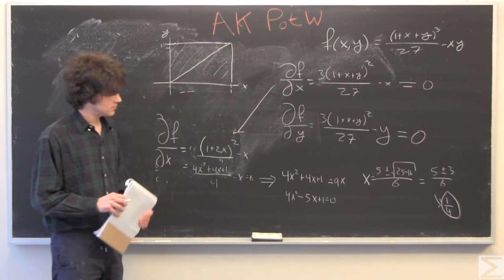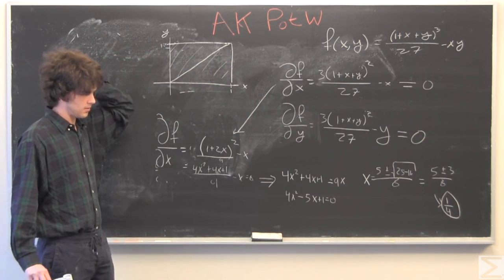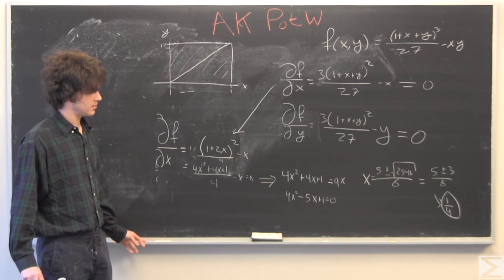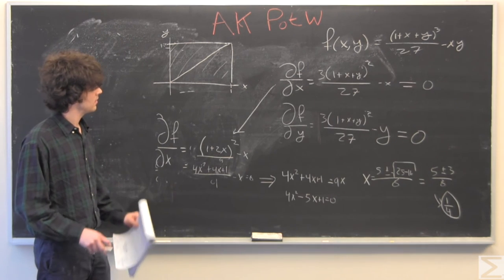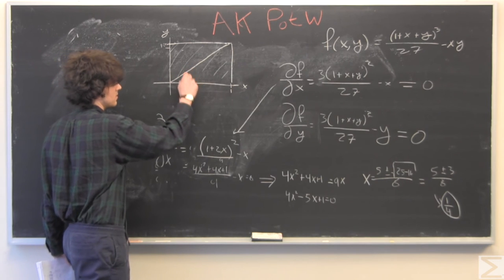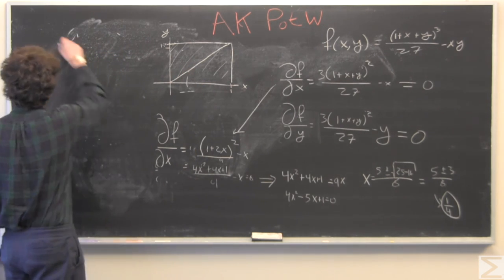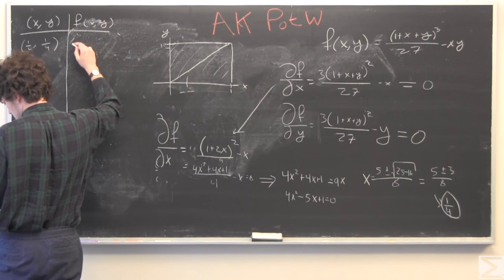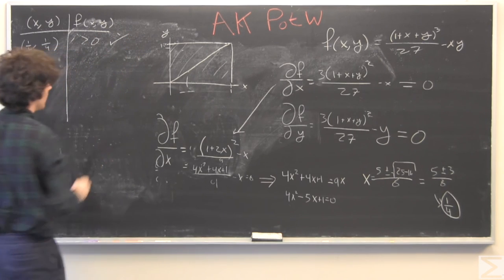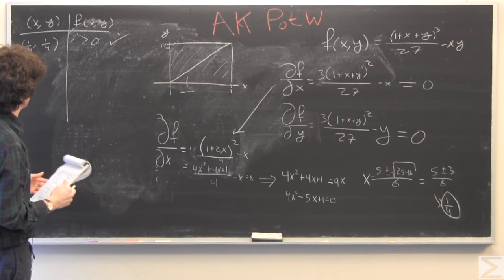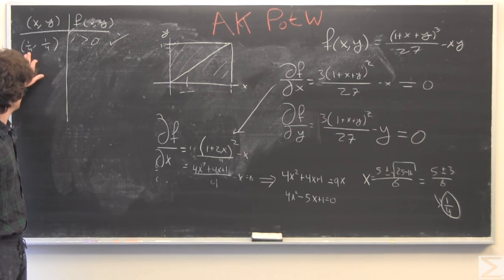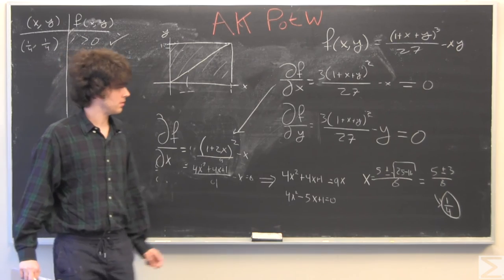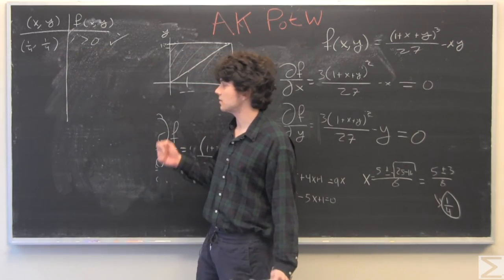And we're going to choose the, if we add 3, we have 8 over 8, which is 1. And if we subtract 3, we have 2 over 8, which is a quarter. So we're going to choose the one that's in the interior, which is x equals 1 quarter and 1 quarter. And so we have x, y equals 1 quarter, 1 quarter. Plug that in there. You can use a calculator or whatever you want to check that that is indeed greater than 0.